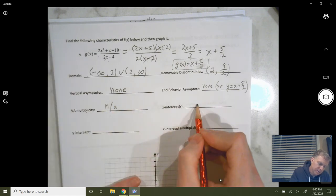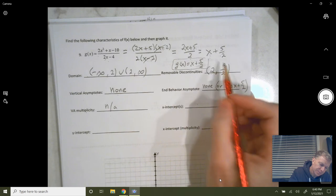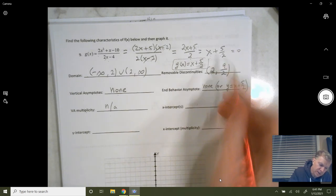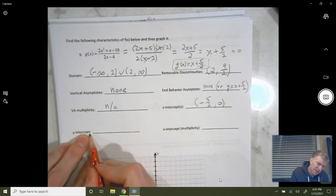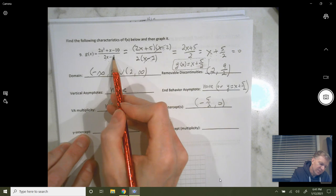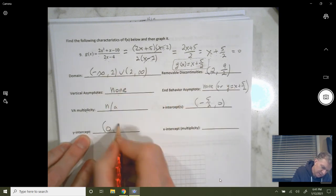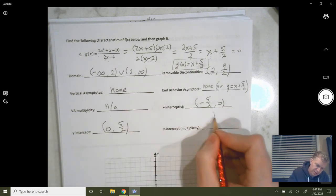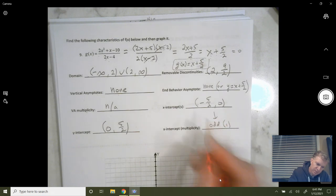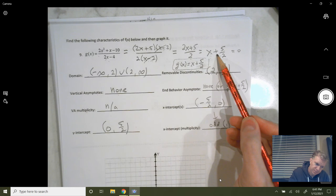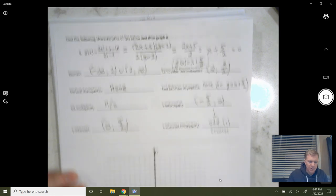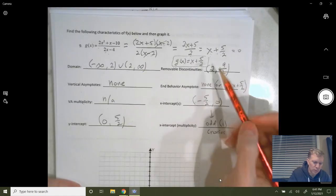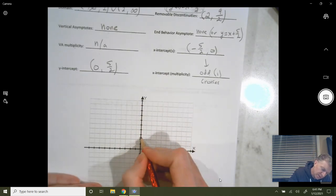When x-intercepts, the x-intercepts happen when y is zero. So if you set this thing equal to zero, your x-value is going to be negative 5 halves. Your y-intercept happens when x is zero. So you plug in zero for x, you're going to get 5 halves. So you can see it right there, 5 halves. X-intercept multiplicity is odd, because this thing only occurs once. And so you're going to cross through, as opposed to a bounce. Now, a lot of this stuff kind of seems less relevant when you realize you're just graphing a line. y equals x plus 2.5.